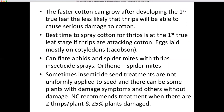The best time to spray cotton is at the first true leaf stage when thrips are attacking, and research by Alana Jacobson has shown that thrips eggs are laid primarily on the cotyledon leaves. Thrips insecticide sprays can flare aphids and spider mites — last year we flared spider mites with two seedling sprays of orthene at the Prattville station. Sometimes insecticide seed treatments are not uniformly applied to seed, resulting in some plants with damage symptoms and others without. In this situation, North Carolina recommends treatment when there are two thrips per plant and 25 percent of the plants are damaged.